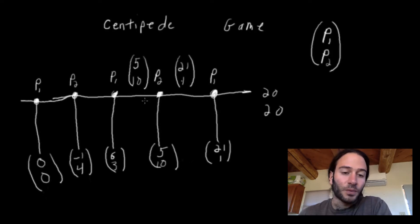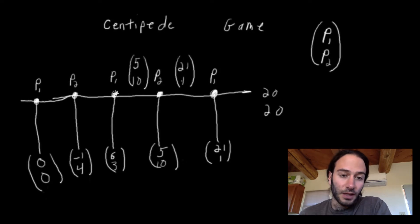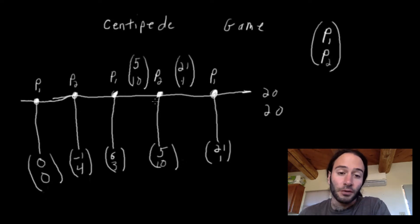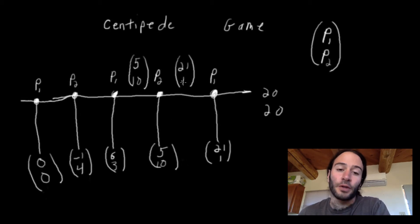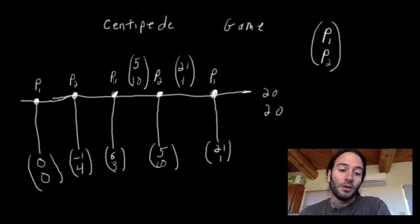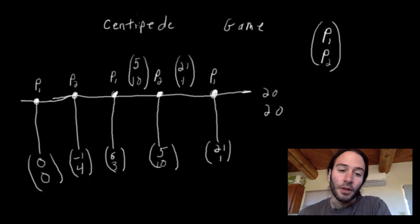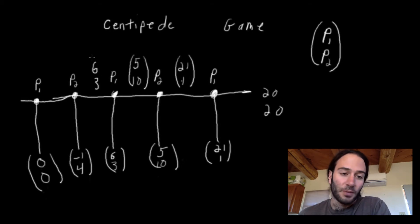We repeat the same thing for player one at the second decision node. If player one chooses to keep going, it knows it'll only get a payoff of 5, because it knows player two will choose to stop, since player two knows if it keeps going it would only get a payoff of 1. So player one is comparing a value of 5 to keep going versus a payoff of 6 to stop. Since 6 is greater than 5, player one will choose to stop.